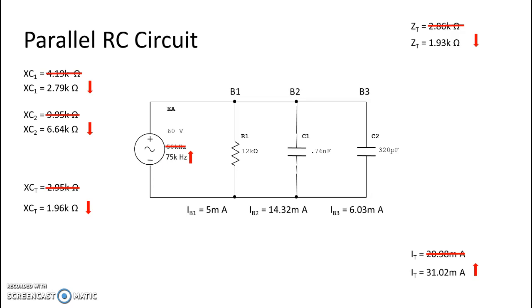All right, we're going to take one last look at our currents for our individual branches. So we know that the current through B1 is going to stay the same. Voltage has not been affected by frequency, and neither has resistance. So since current is voltage divided by resistance, if neither one of those values change, it's not possible to see a change in current. So that one will stay the same.